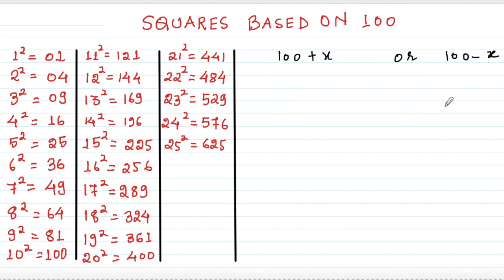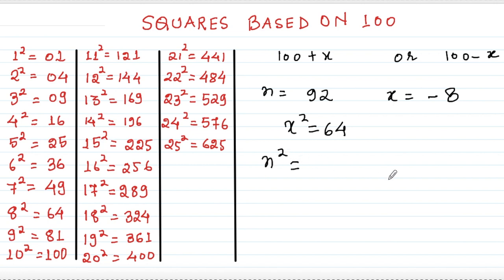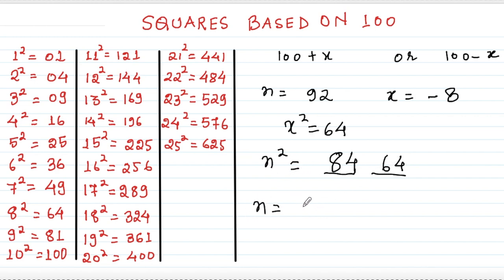Now let me take a number less than 100: n equals 92. Here x equals 92 minus 100 equals negative 8. Whether x is positive or negative, x² is always positive, so x² equals 64. The last two digits of n² are 64. For the remaining digits, I do n plus x, but since x is negative it's equivalent to subtracting: 92 minus 8 equals 84. So n² is 8464.